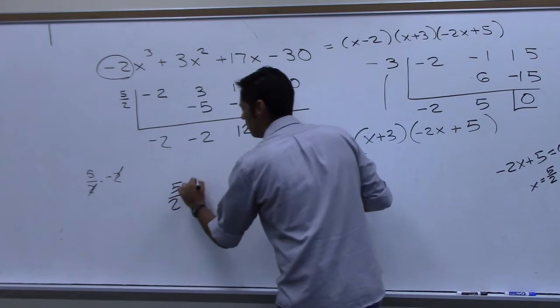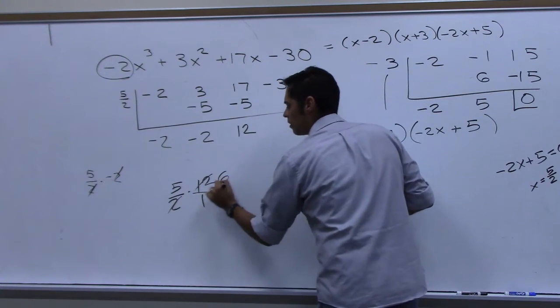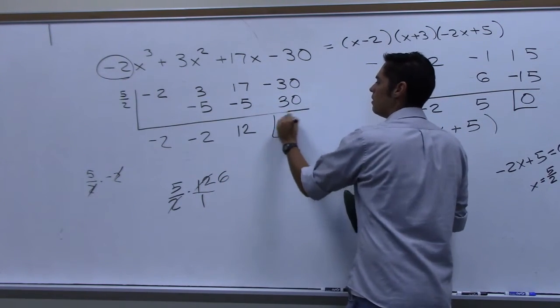Okay, what's five halves times twelve or twelve over one? Six. You get thirty. Ah, remainder of nothing, right?